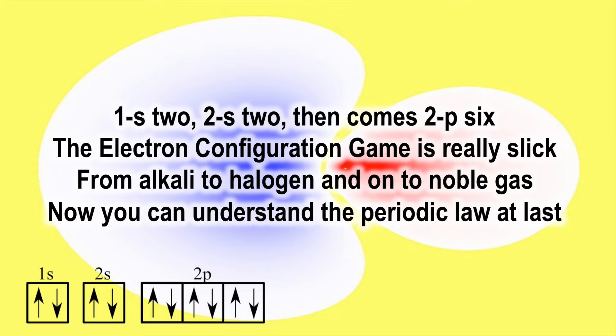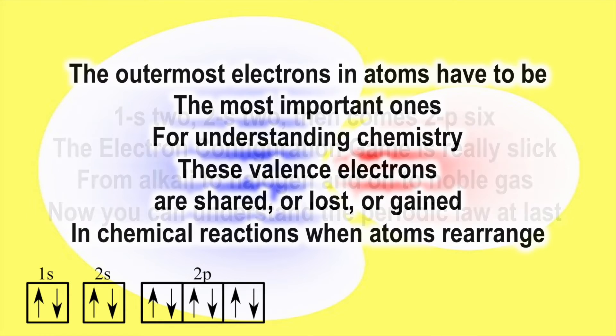1s two, 2s two, then comes 2p six. The electron configuration game is really slick. From alkali to halogen and on to noble gas, now you can understand the periodic law at last.